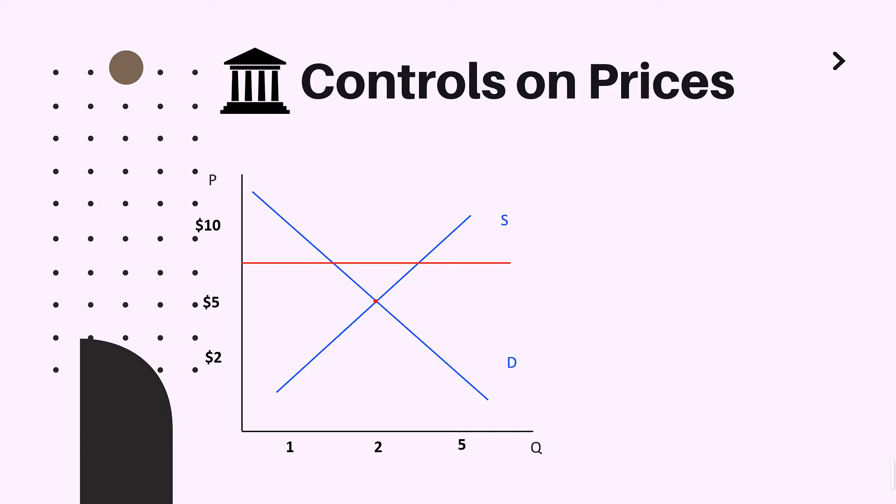Now let us discuss what happens if we have a binding price floor. As you can see, the price goes up — the suppliers are incentivized to produce more, yet consumers are not willing to pay such a high price and demand will be lower than at the equilibrium point. Thus we will have a concept we've already discussed: we will have a surplus.